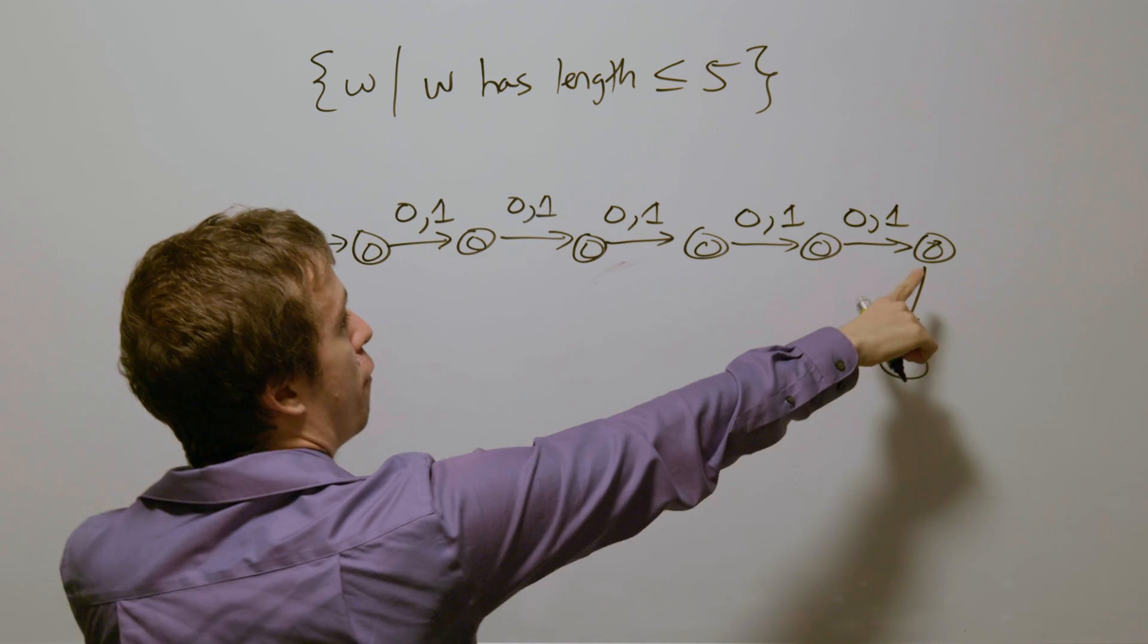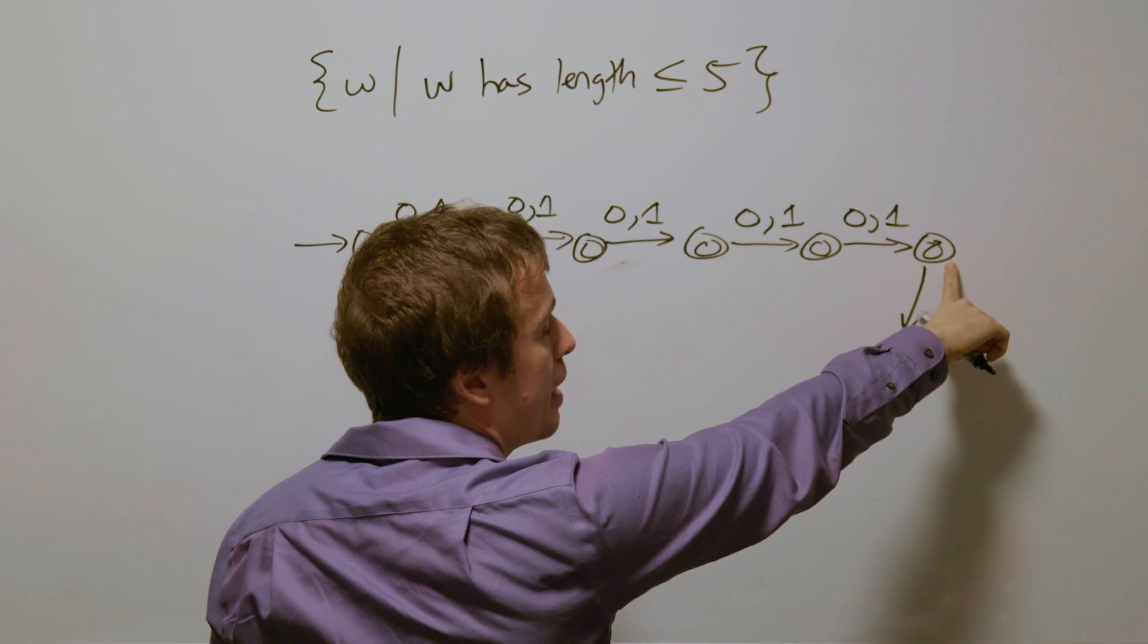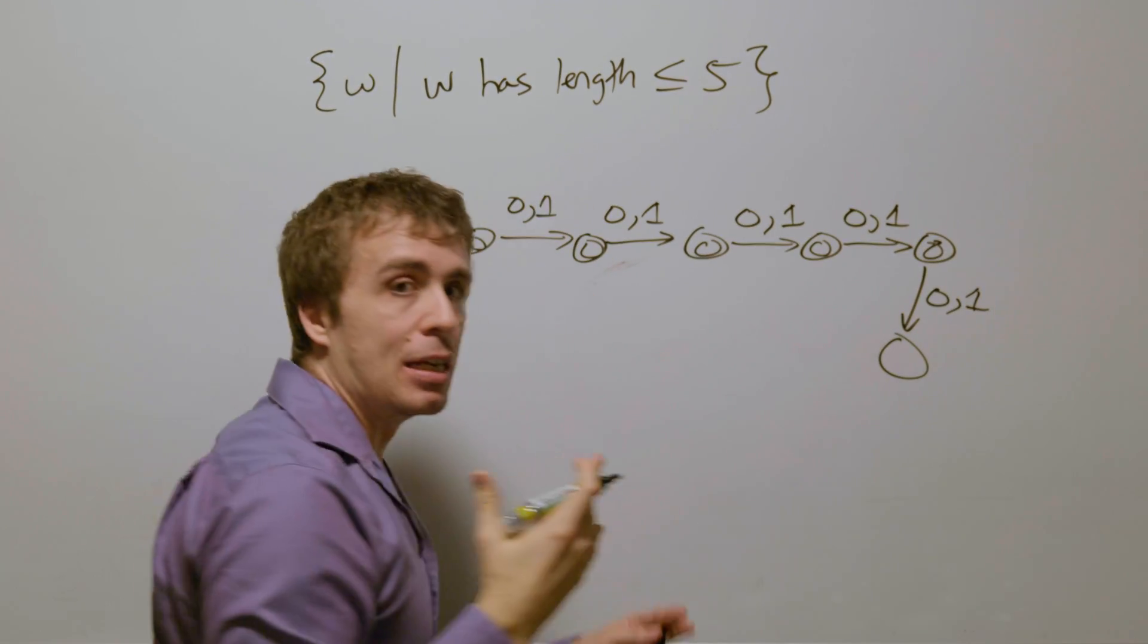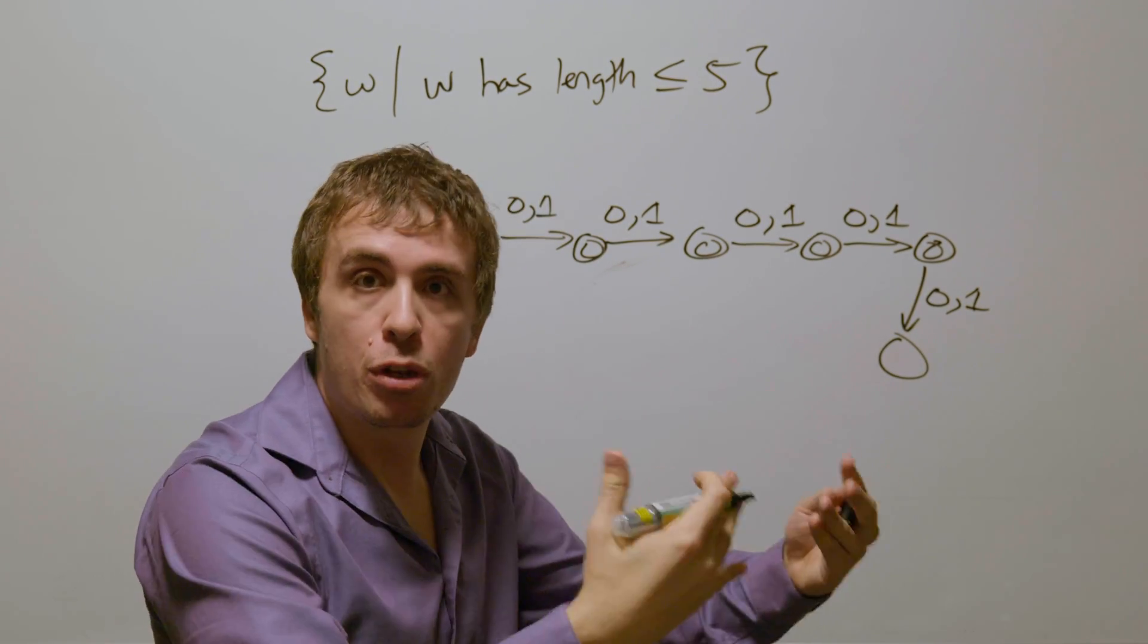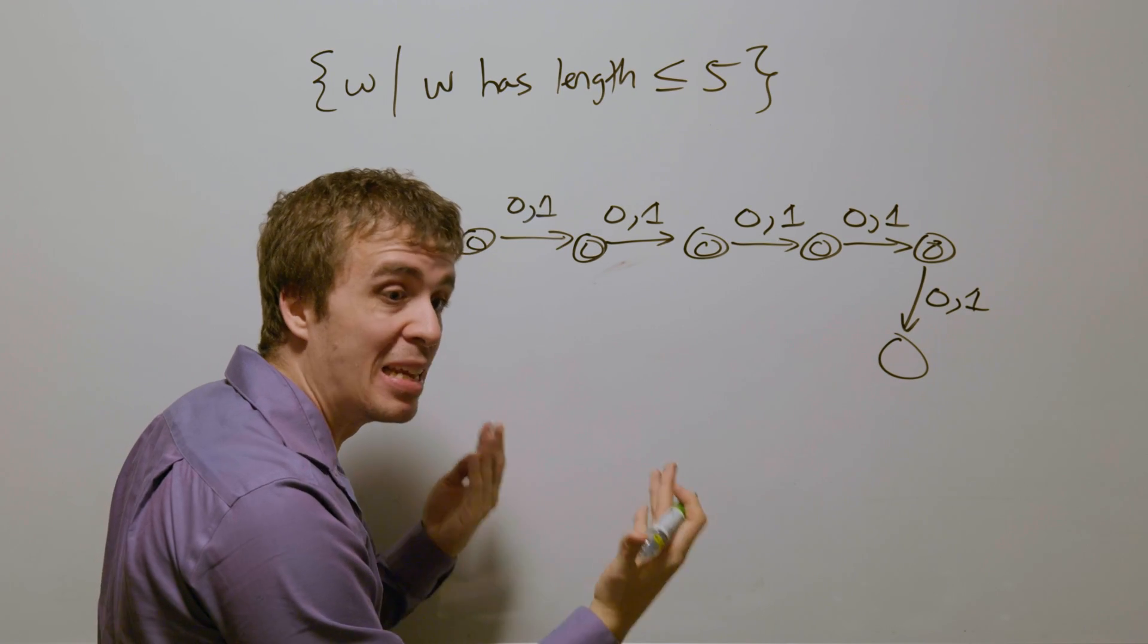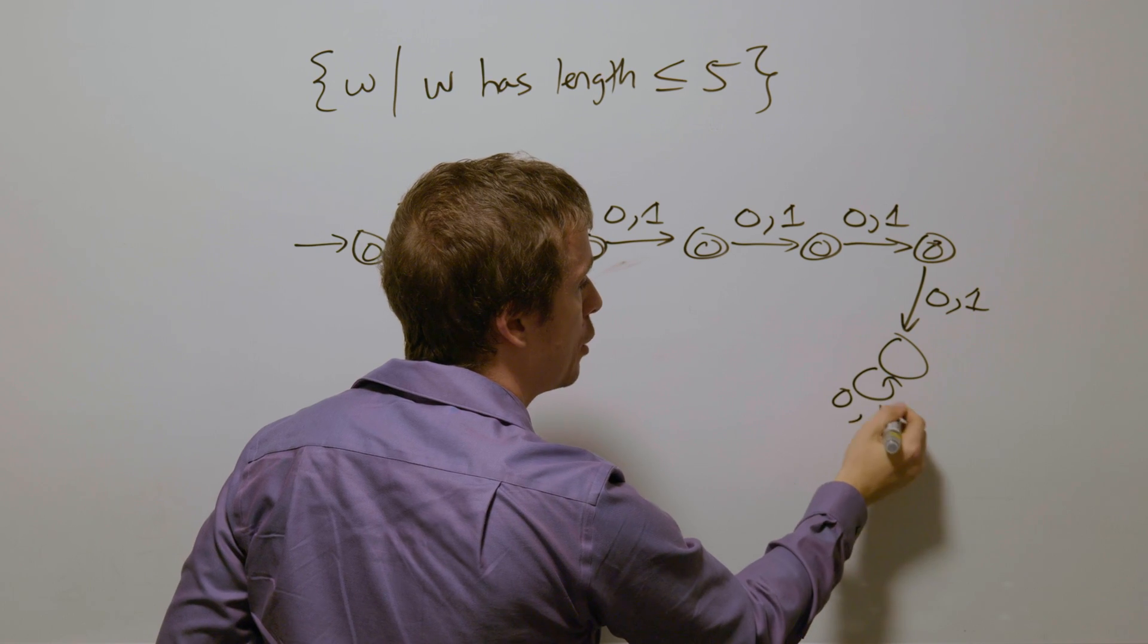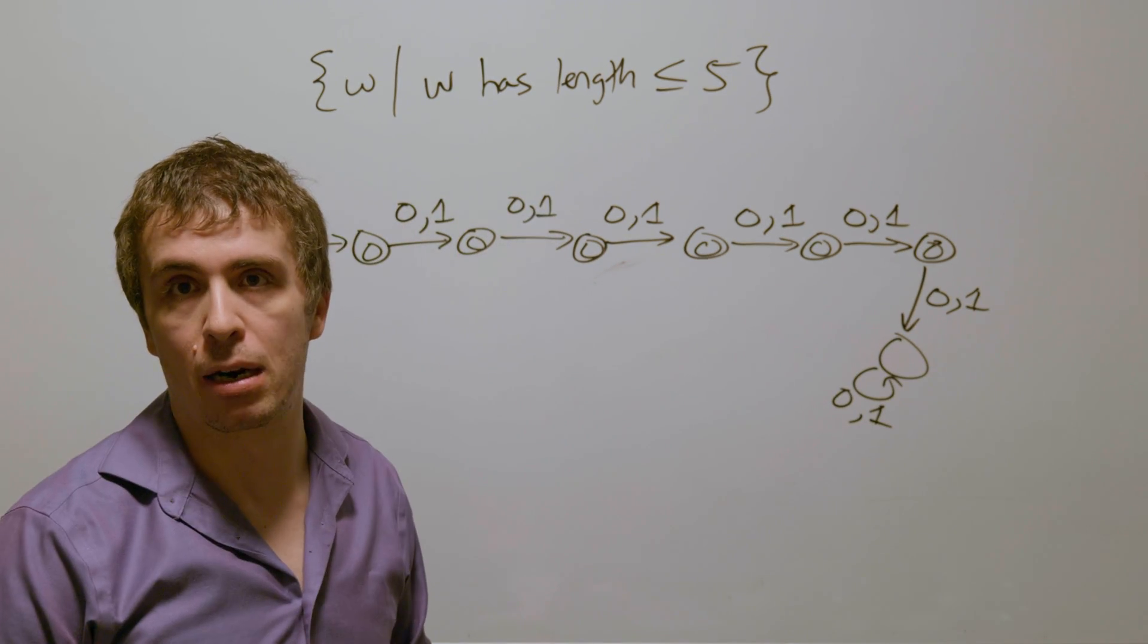So then we've read five things if we got to this state. So if we read one more, that means we have read six things. And we should allow ourselves to read through the rest of the string, because after all, it is a DFA. And so therefore, I'm going to have a dead state down here that just blasts through all the remaining characters.